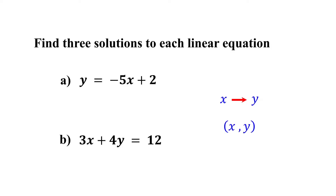To find a solution to a linear equation: first, choose a value for one variable. Then, substitute it into the equation and solve for the other variable. Finally, write the solution as an ordered pair.